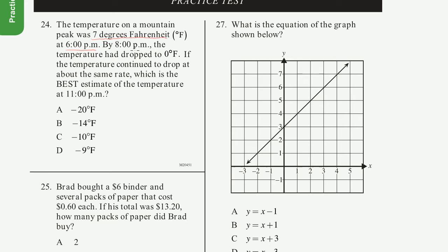The temperature on a mountain peak was 7 degrees Fahrenheit at 6 p.m. By 8 p.m., so two hours later, the temperature had dropped to 0 degrees Fahrenheit. If the temperature continued to drop at the same rate, which is the best estimate of the temperature at 11 p.m.? So what happened? We went from 6 p.m. to 8 p.m. That was two hours, right?